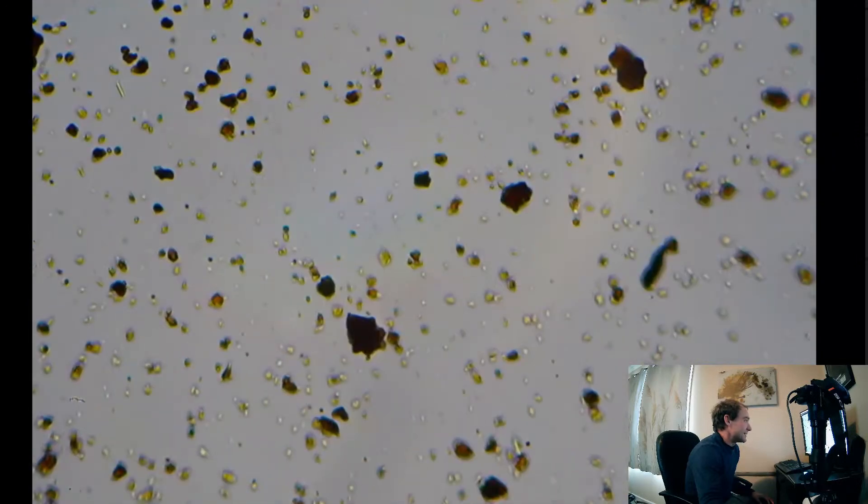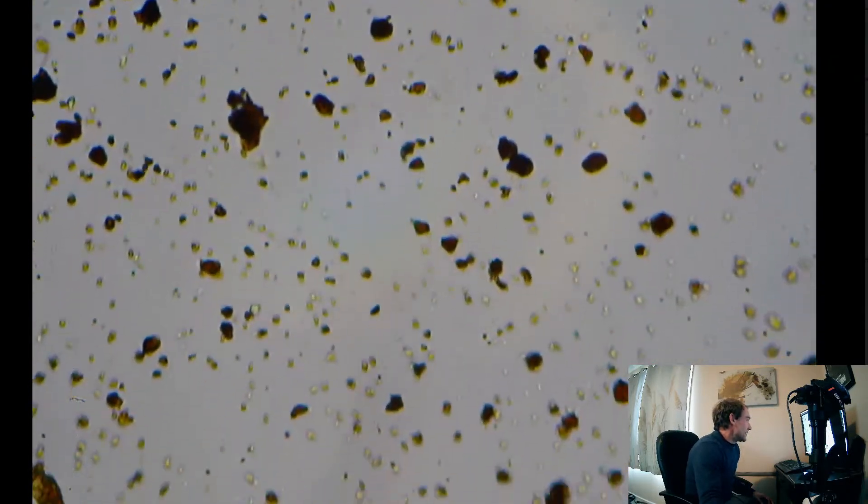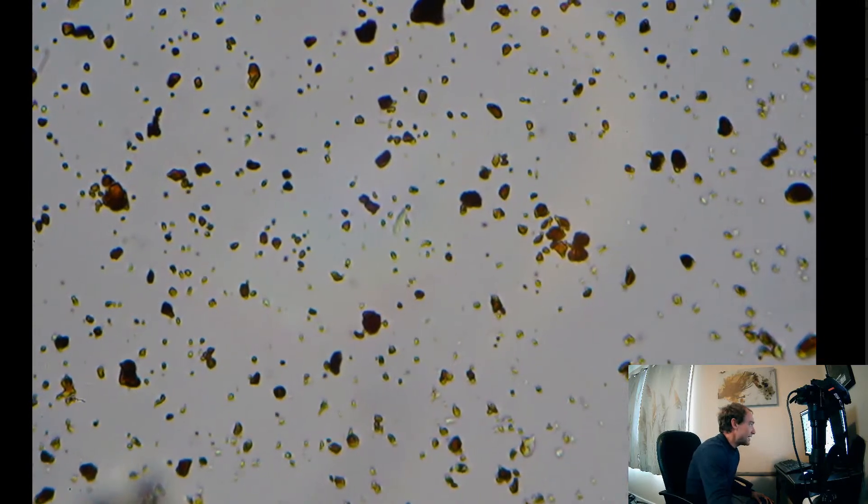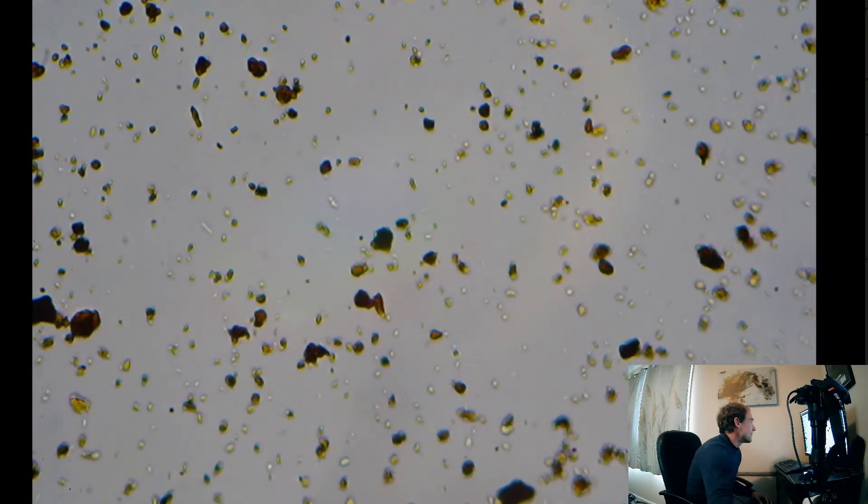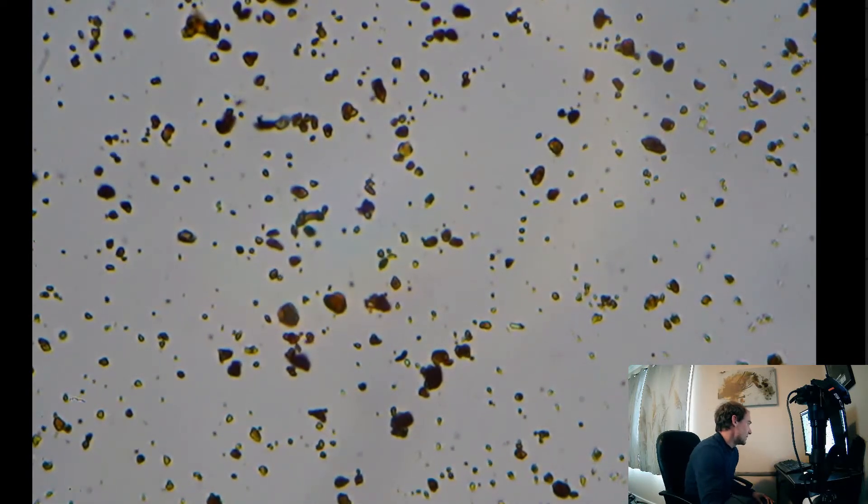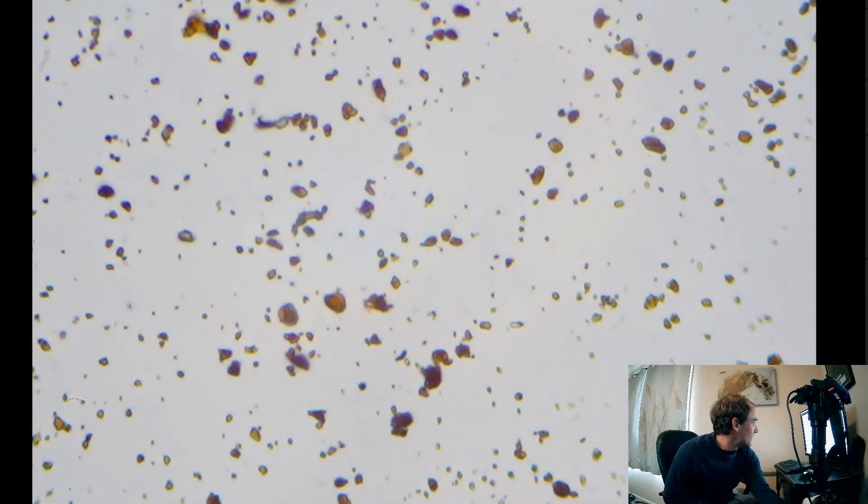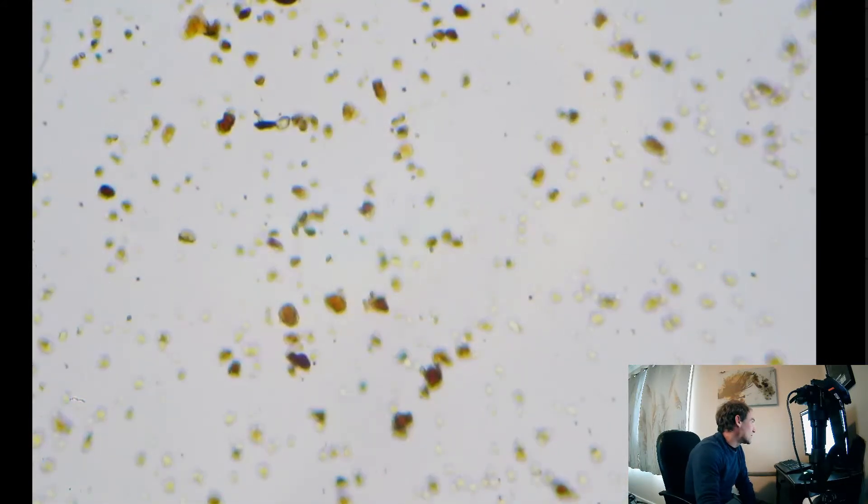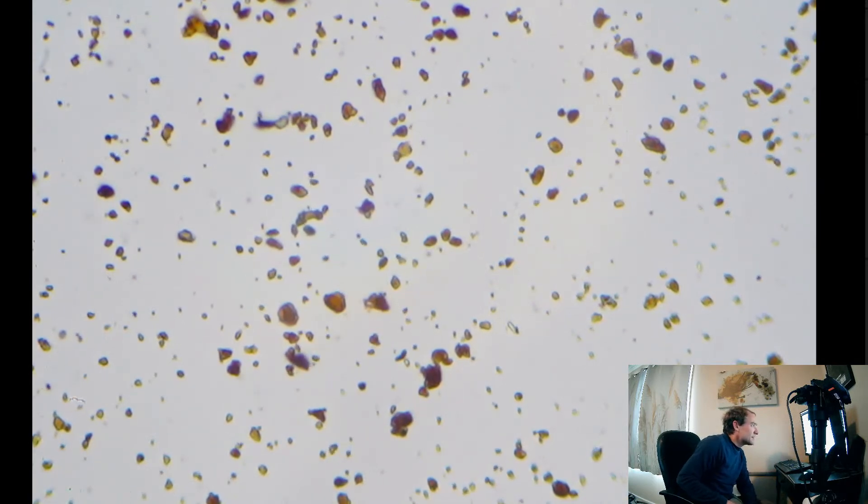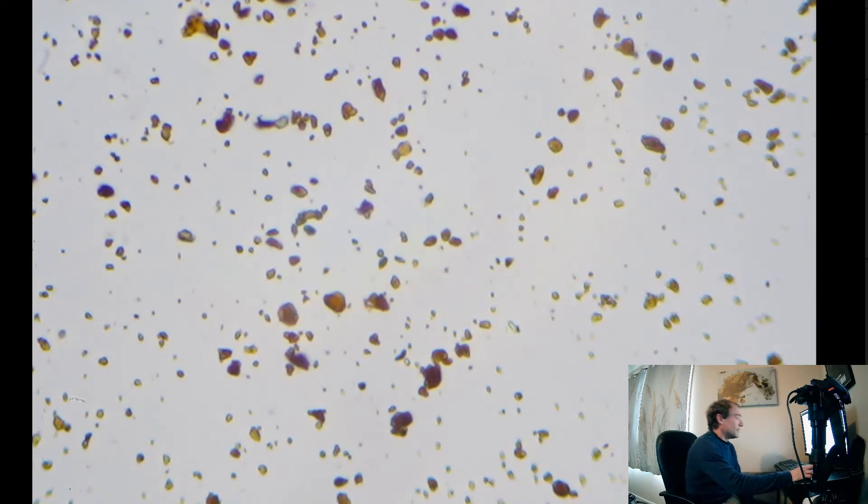Let's take a peek around, see if there's anything else interesting we could find to look at here at 600x. But pretty uniform, we're seeing the same thing throughout the whole slide so far. A little bit of shading off. Shine a little bit more light through some of those things. You can see a lot of these little round things.